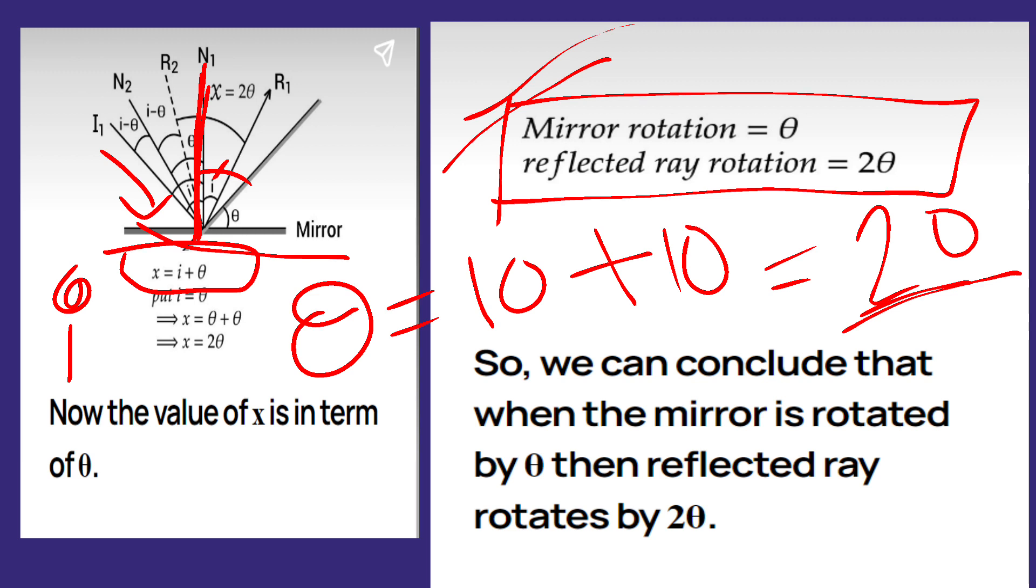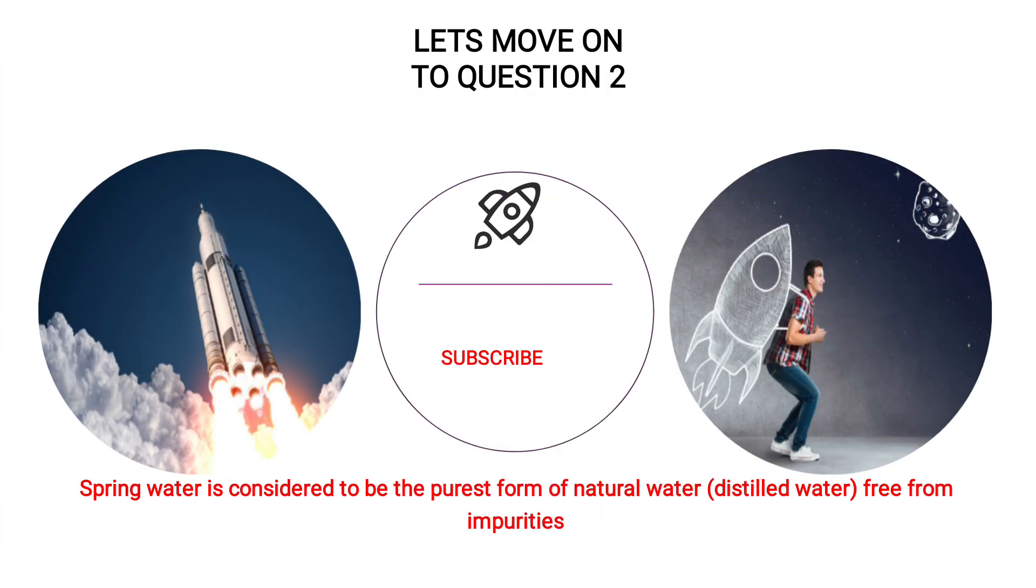The basic concept is: just remember that if the angle is given in a question and they have asked what will be the change in the reflected ray from the mirror, the answer will be multiply that degree with 2, you will get the answer. Therefore, if mirror rotation is theta, then the reflected ray rotation is 2 theta.